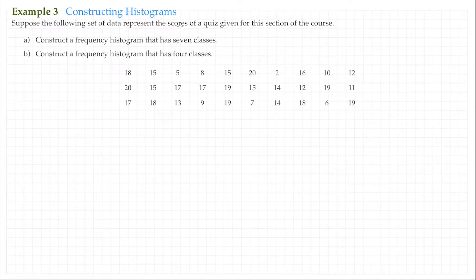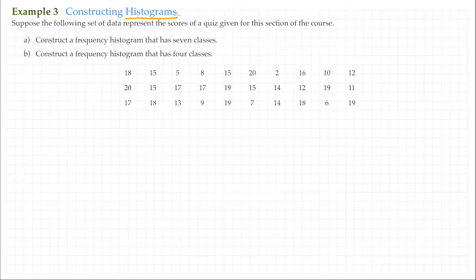In this example, we are going to be constructing two histograms. A histogram is a bar graph, but it is a bar graph that represents data of numerical values. The previous examples were bar graphs that represented certain characteristics, like letter grades from a professor or student opinion about something. But when you have numerical data, those numbers have to be represented using a number line, or more precisely, an x-axis.